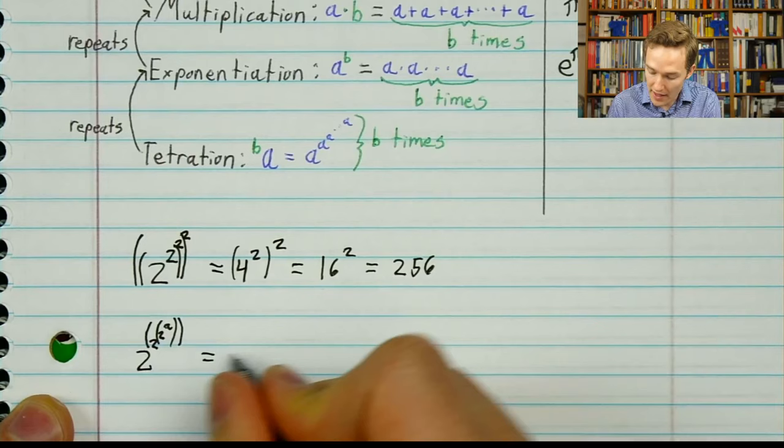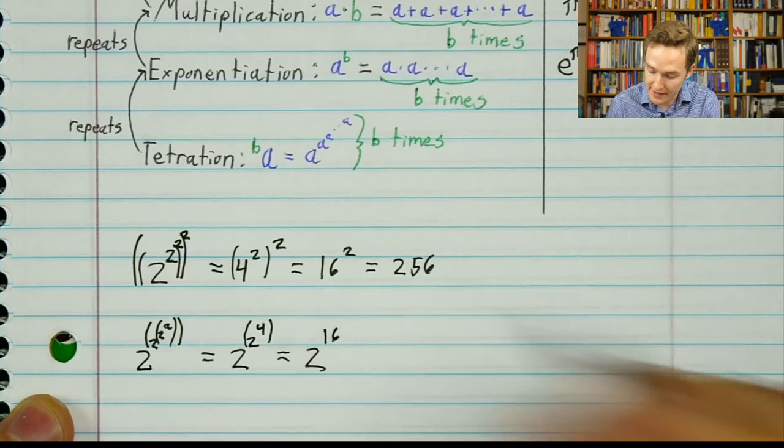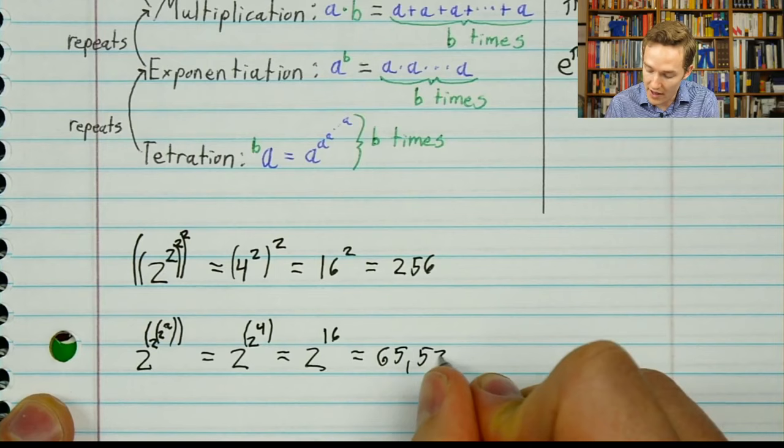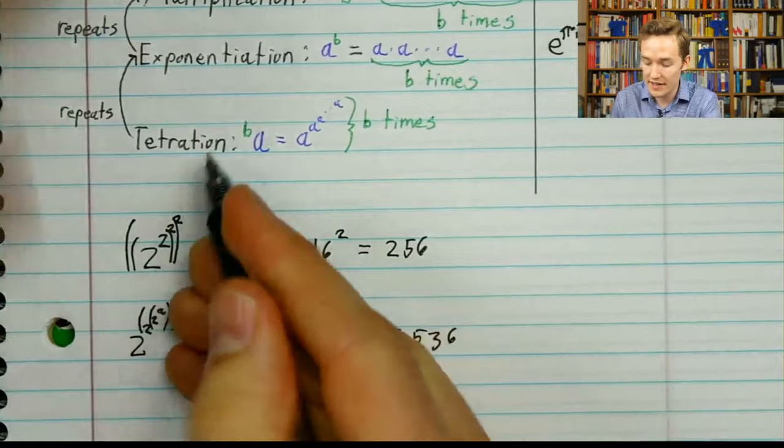But if I start by collapsing the top term, it becomes 4, and then collapsing the current top term, that becomes 2 to the 16 — which is 65,536, a much bigger number. In general, this process of repeatedly exponentiating going from top to bottom explodes very quickly. Tetration refers to the top-to-bottom convention: we start evaluating at the top and work down.